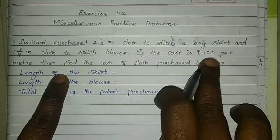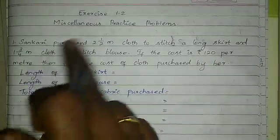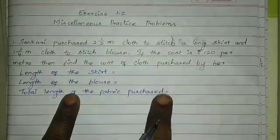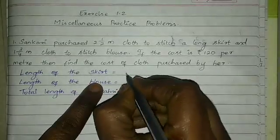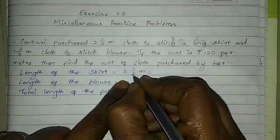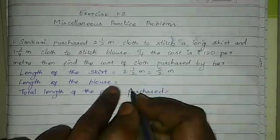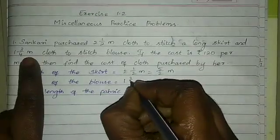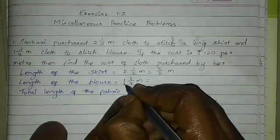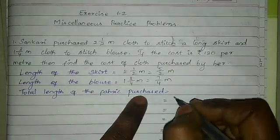1 meter is ₹120. The length of the skirt is 2.5 meters — as a mixed fraction converted to an improper fraction: 2 times 2 equals 4, plus 1 equals 5, so 5/2 meters. The length of the blouse is 1¾ meters — as an improper fraction: 4 times 1 equals 4, plus 3 equals 7, so 7/4 meters.